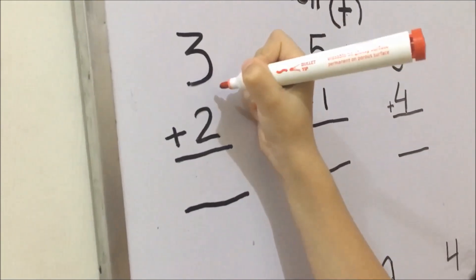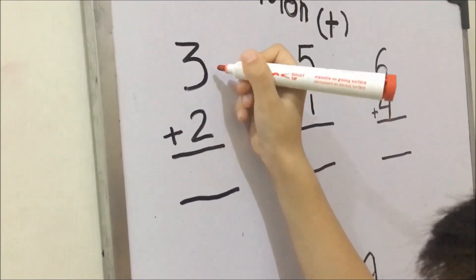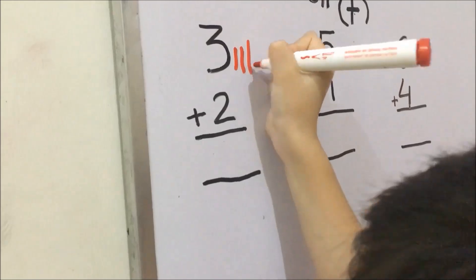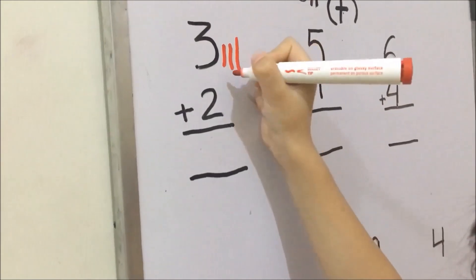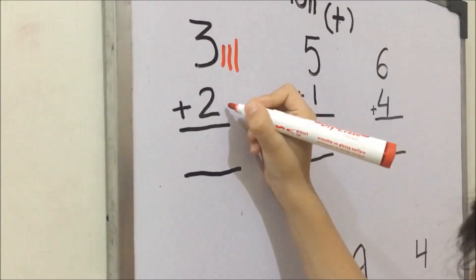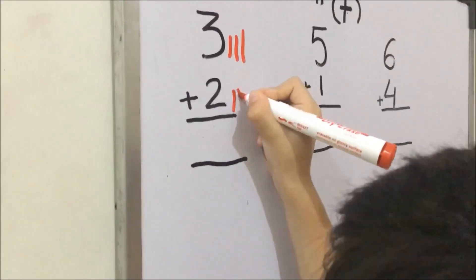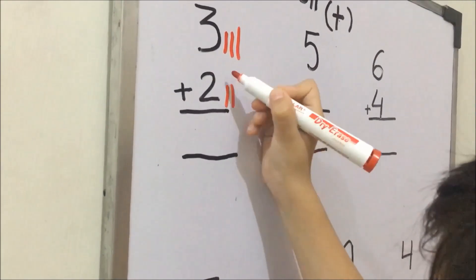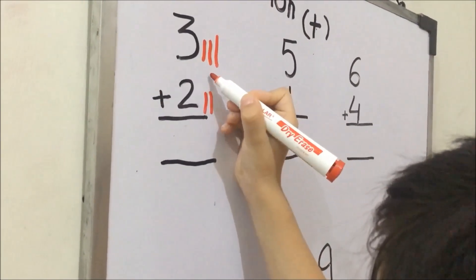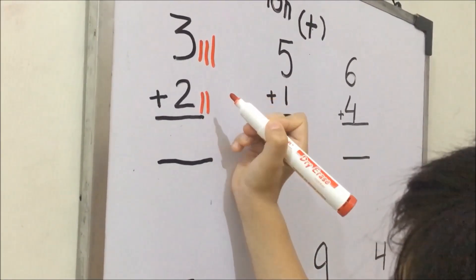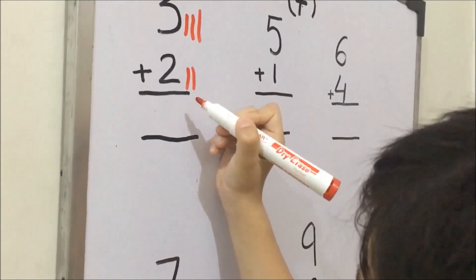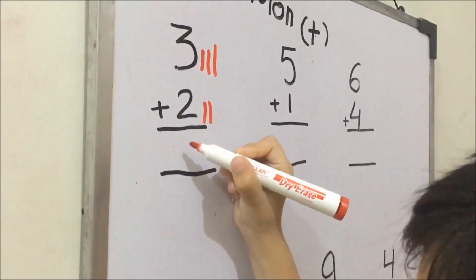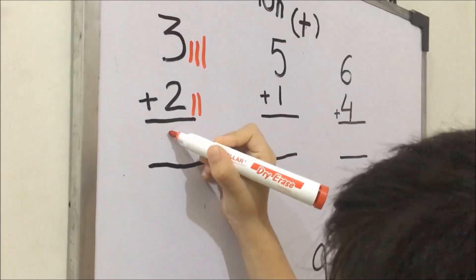Friends, here we have 3 lines, we have to add 3 lines. And here 2 lines, we have to add 2 lines. Now we have to add them — 1, 2, 3, 4, 5. Friends, here 5 answers, we have to write 5 answers.